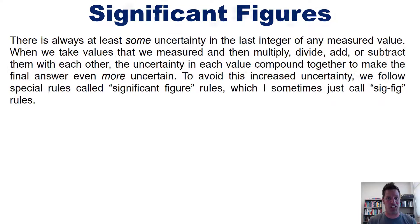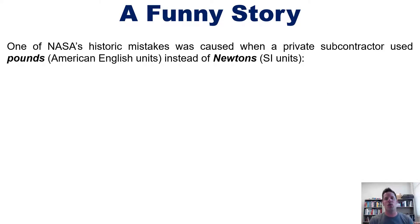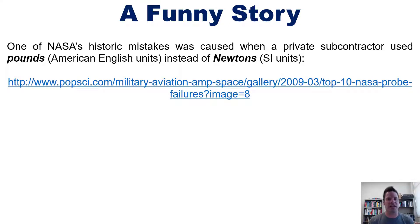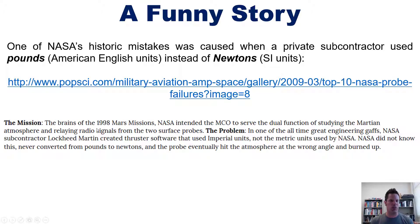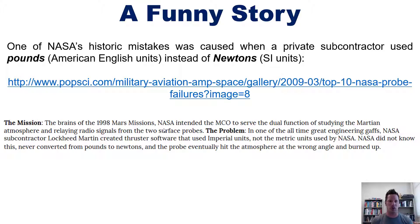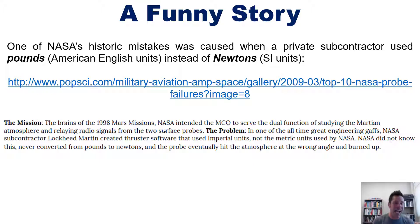Before getting into that, here is an important story. One of NASA's historic mistakes was caused when a private subcontractor used pounds, which are American English units, instead of Newtons, which are SI units. NASA subcontractor Lockheed Martin created thruster software that used Imperial units — the British pound — not the metric units used by NASA. NASA never converted from pounds to Newtons, and the probe eventually hit the Martian atmosphere at the wrong angle and burned up. My point is that using SI units properly and interconverting between units using significant figure rules can often be very important.